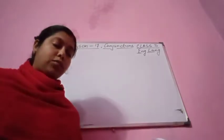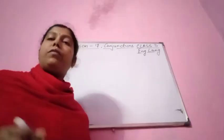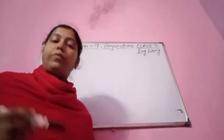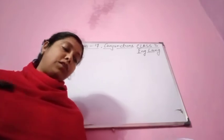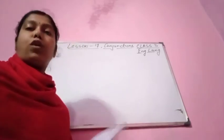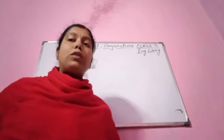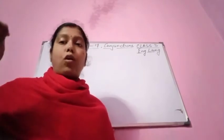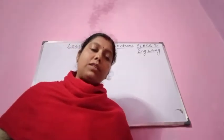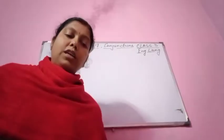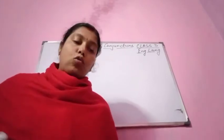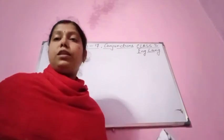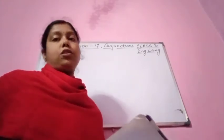Keep in mind: sentences where words or ideas that are similar are joined, we use 'and.' Sentences where words or ideas that are opposites are joined, we use 'but.' And sentences where words or ideas that express a choice are joined, we use 'or.' Conjunctions are words that combine words, groups of words, or sentences.